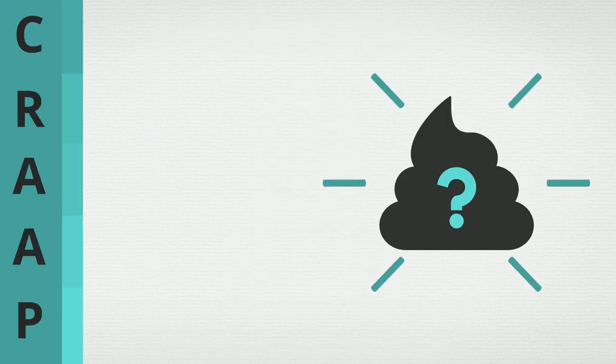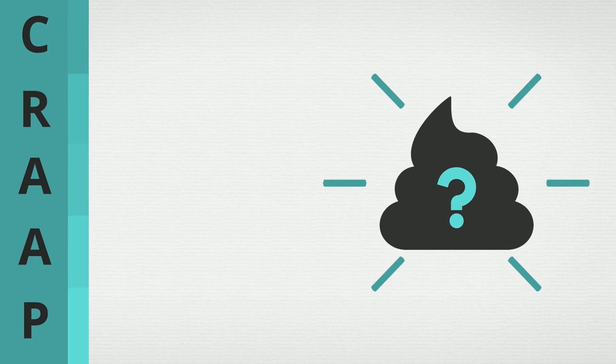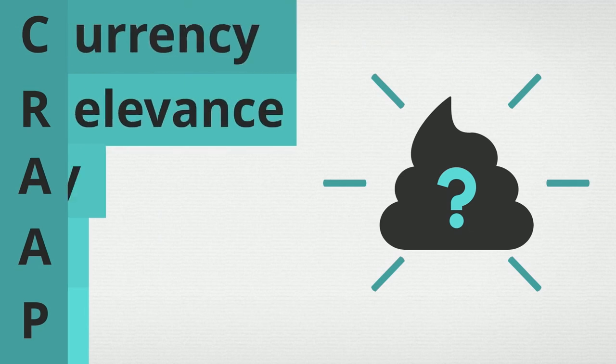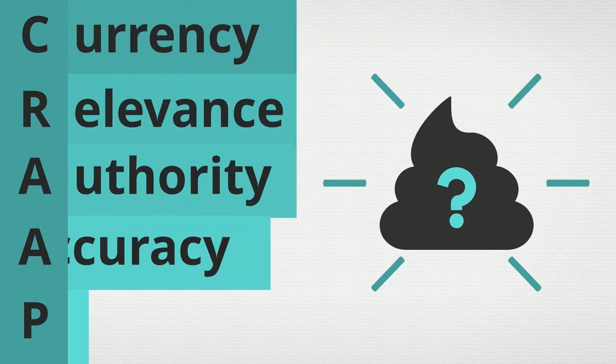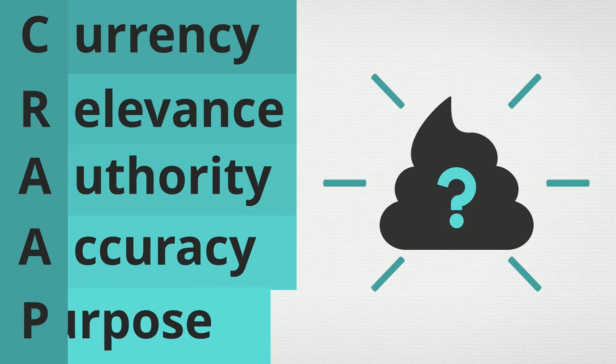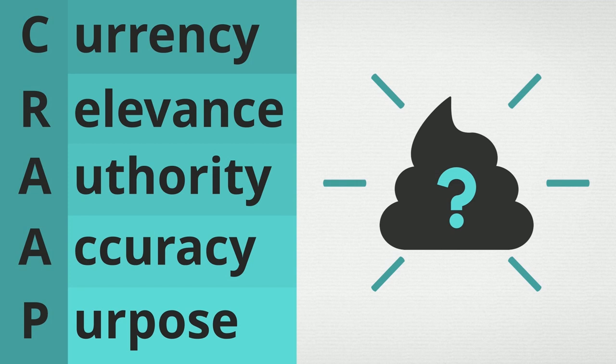She called it the CRAAP test. That's Currency, Relevance, Authority, Accuracy, and Purpose. In this video, we'll show you how to use the CRAAP test to evaluate the sources you find in your search to ensure that they are quality, relevant, and credible resources.